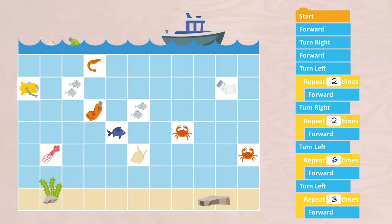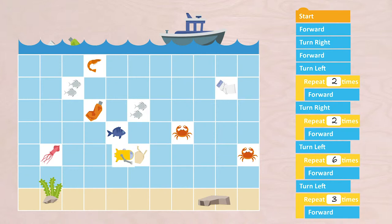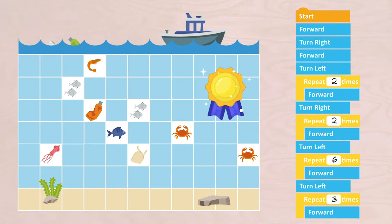Shall we take a look at it together? START, FORWARD, TURN RIGHT, FORWARD, TURN LEFT, REPEAT TWO TIMES FORWARD, TURN RIGHT, REPEAT TWO TIMES FORWARD, TURN LEFT, REPEAT SIX TIMES FORWARD, TURN LEFT, REPEAT THREE TIMES FORWARD. Maybe you solved it differently — that's just fine. In programming, there is often more than one solution.